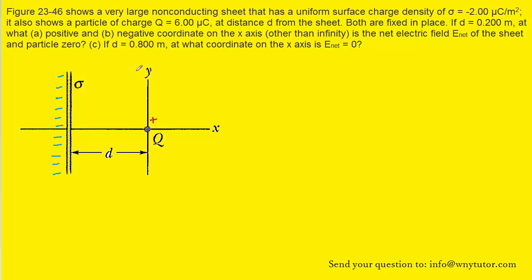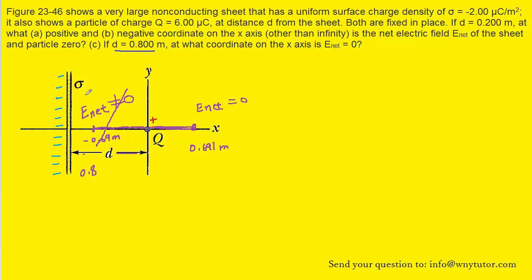For Part C, we don't need a new calculation — D now has a value of 0.8 meters. We again find distances of positive and negative 0.691 meters. Going positive 0.691 meters still gives a valid point where the net electric field is zero. However, going negative 0.691 meters would place us between the sheet and the charge, since D is now 0.8 meters and 0.691 is less than 0.8. We concluded earlier that the net electric field can never equal zero between the sheet and the charge, so we disregard that point. Therefore the only answer for Part C is positive 0.691 meters.